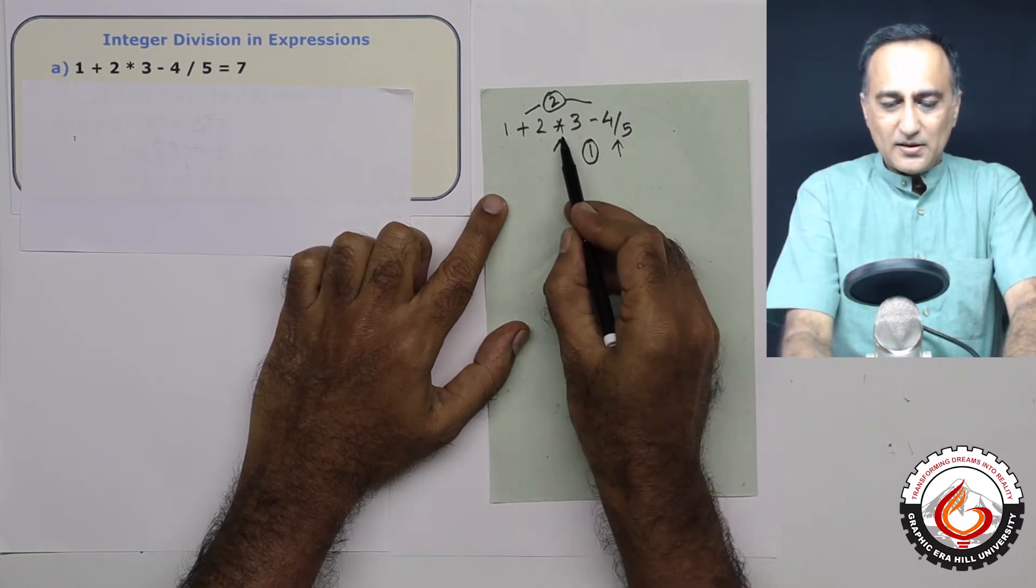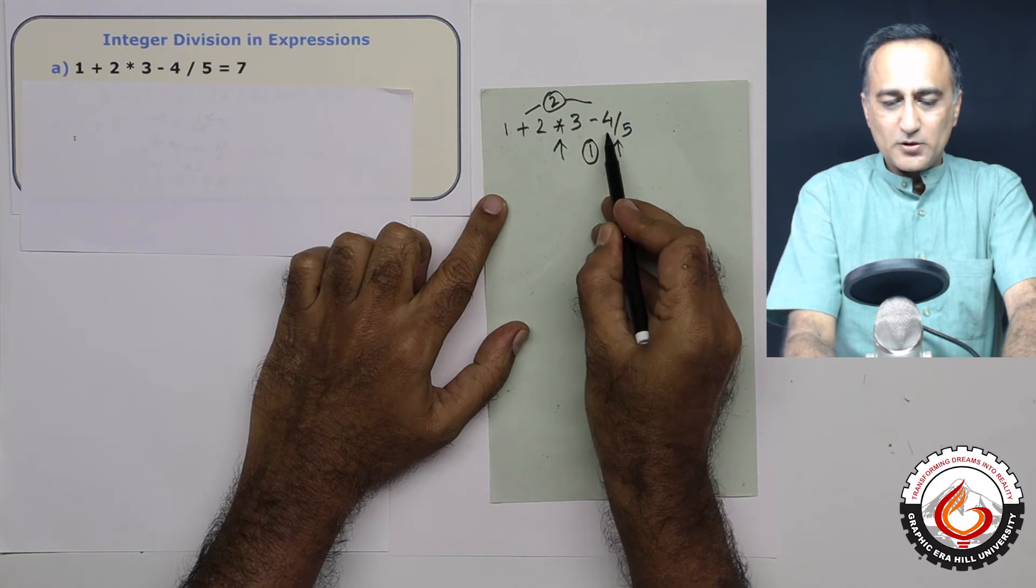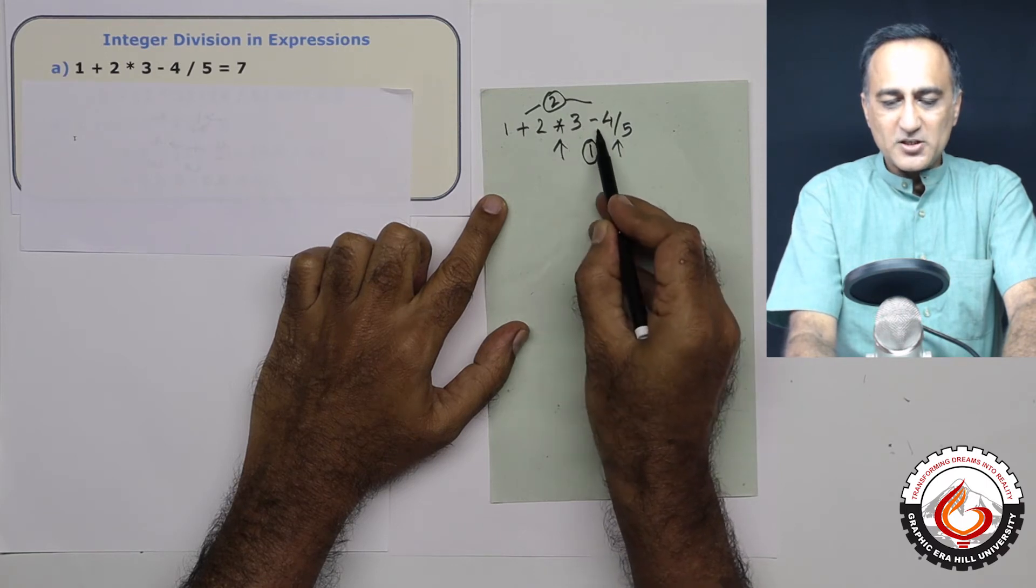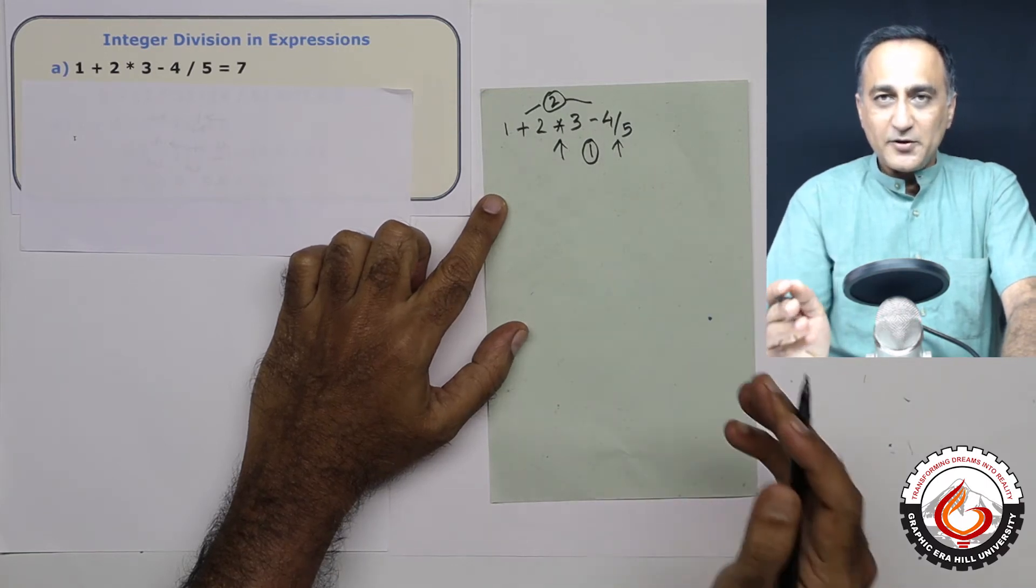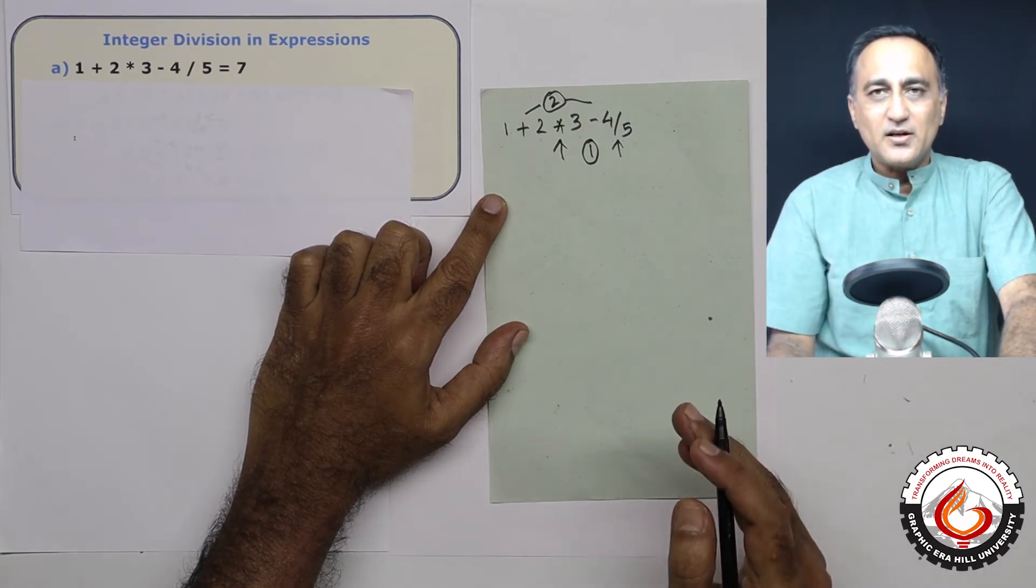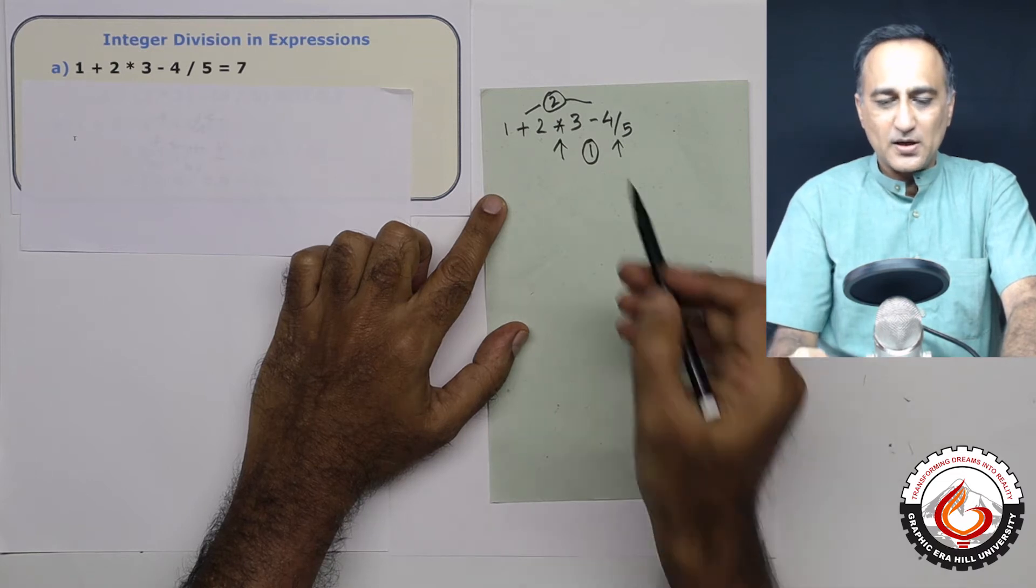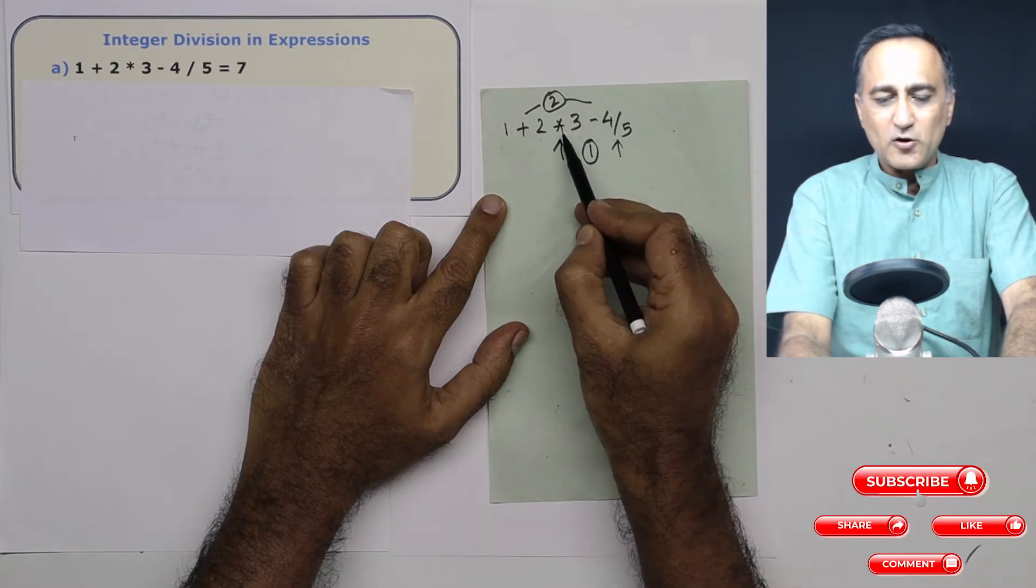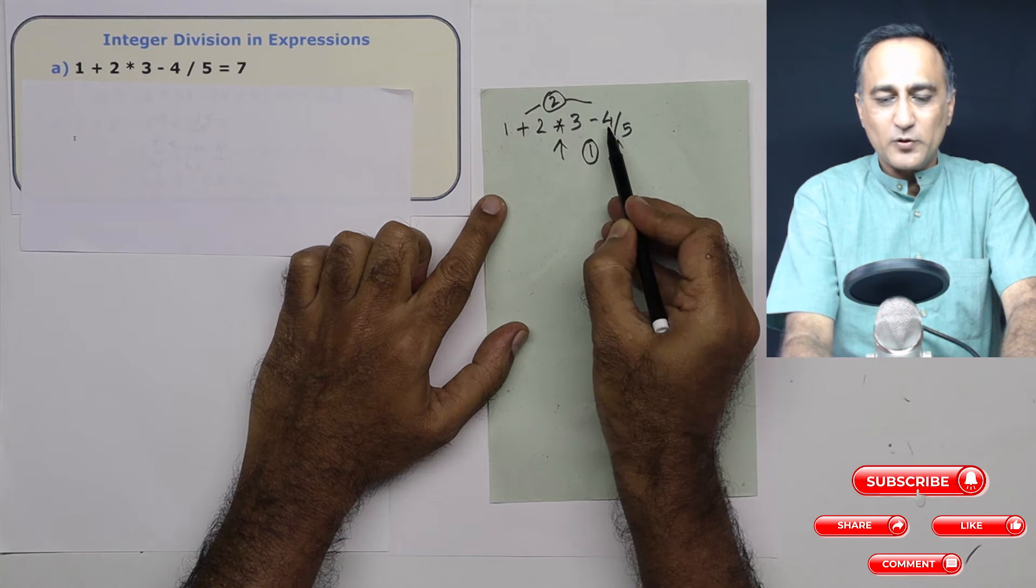Now again, since both of them have got priority 1, multiplication and division, I need to take a call which I need to do first. Here, the principle of associativity helps me. It tells me arithmetic operators are always evaluated from left to right.